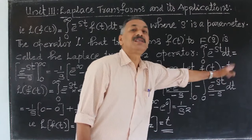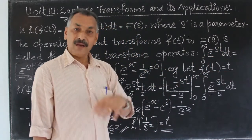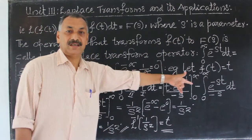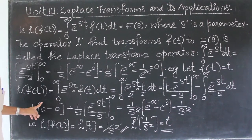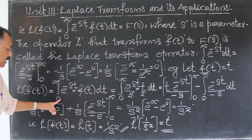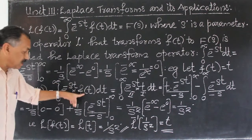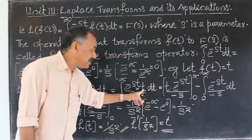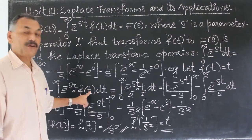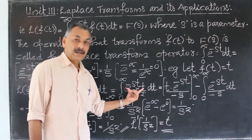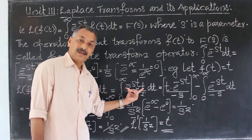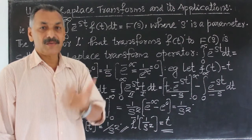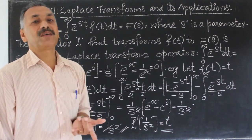Next, consider the example: f of t equals t. Then the Laplace transform L of f of t equals the integral from 0 to infinity of e raised to minus st into f of t dt, which equals the integral from 0 to infinity of e raised to minus st into t dt. This is an integral of a product, so we use integration by parts: first times integral of second, minus integral of derivative of first times integral of second.